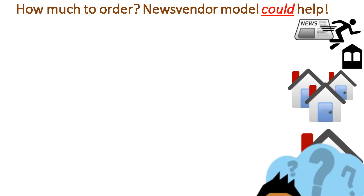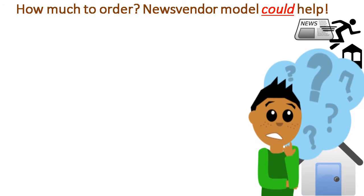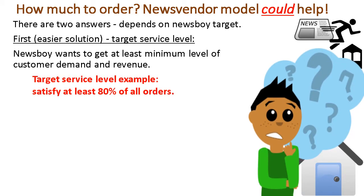The Newsvendor model could help answer the question of how much to order. I emphasize 'could' because the Newsvendor model doesn't give perfectly precise answers — it only suggests possible solutions. There are two solutions possible depending on the newsboy's target. The first, easier solution is that the business simply sets a target service level — a minimum level of customer demand the business wants to satisfy. For example, the newsboy could set a target service level of 80%, meaning stock-out should happen in no more than 20% of cases.